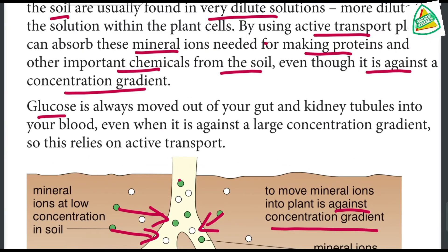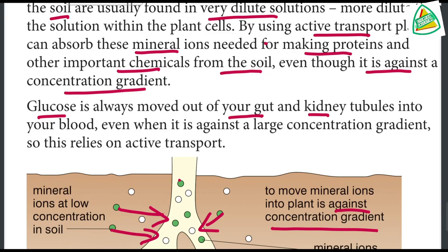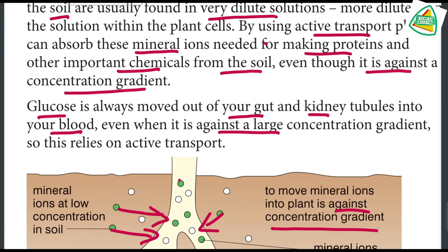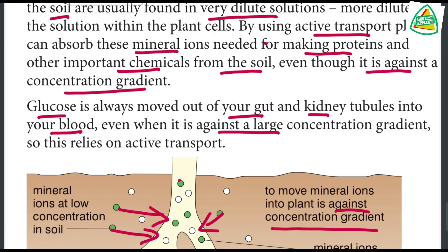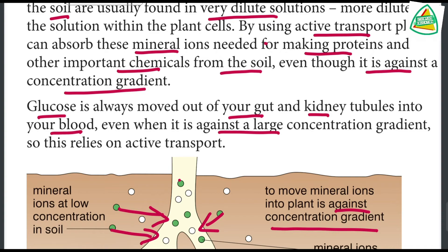Glucose is always moved out of your gut and kidney into your blood. Even so, this movement is against a large concentration gradient, which is why active transport is required.